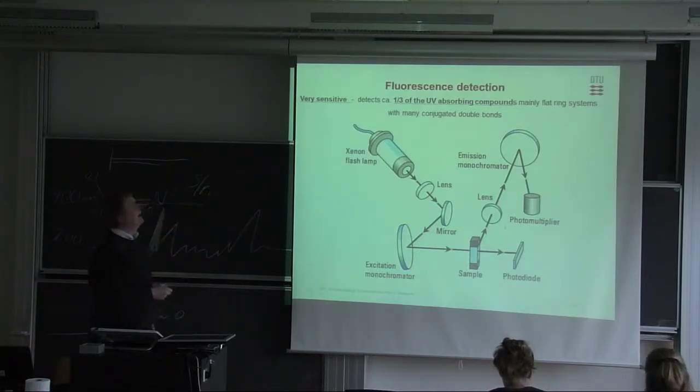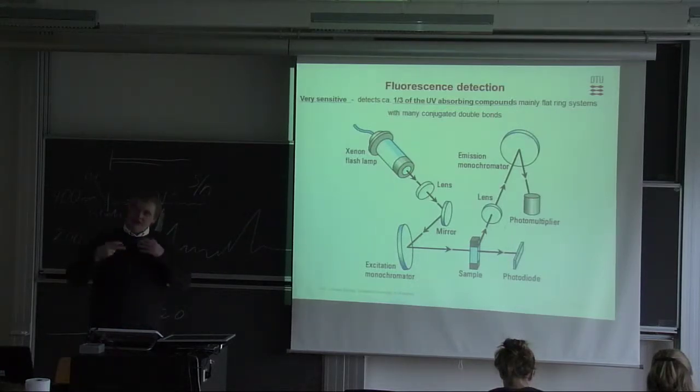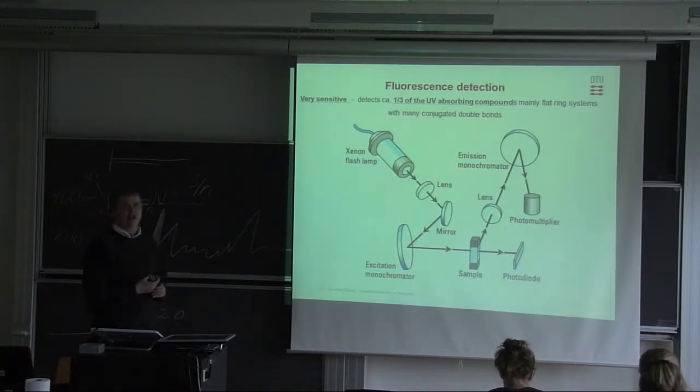The downside of fluorescence is that, first, look at if you have any conjugated double bonds. If not, then it's not going to work. But you still have to optimize it, so you have to find an optimal excitation wavelength and an optimal emission wavelength. So it can take a long time.